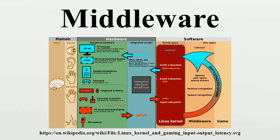Distributed computing system middleware can loosely be divided into two categories: those that provide human time services and those that perform in machine time. This latter middleware is somewhat standardized through the service availability forum and is commonly used in complex, embedded systems within telecom, defense and aerospace industries.